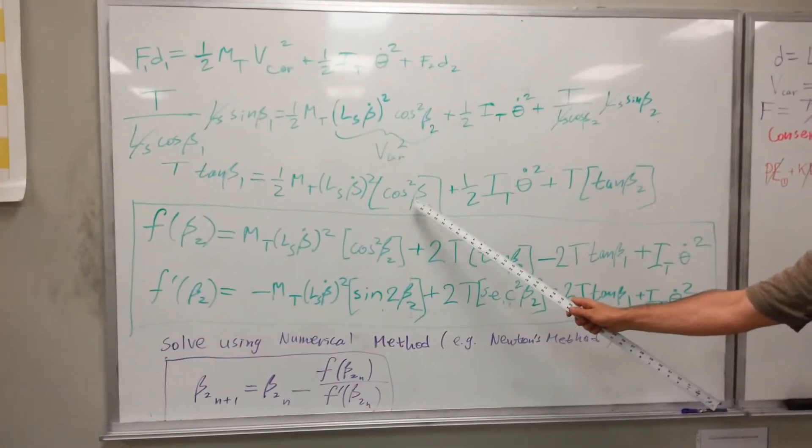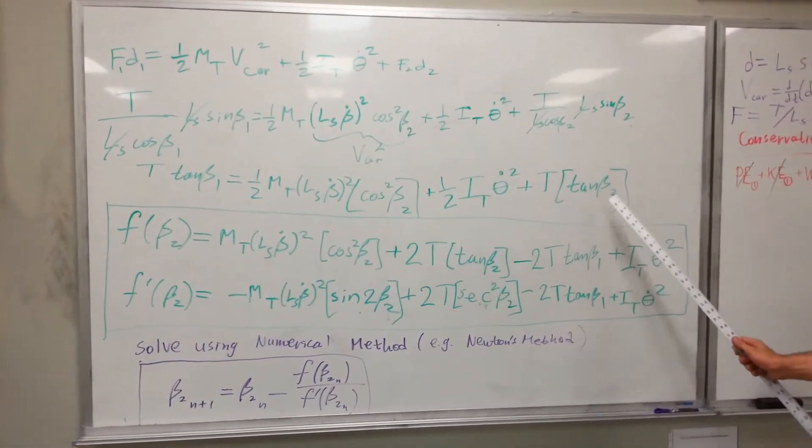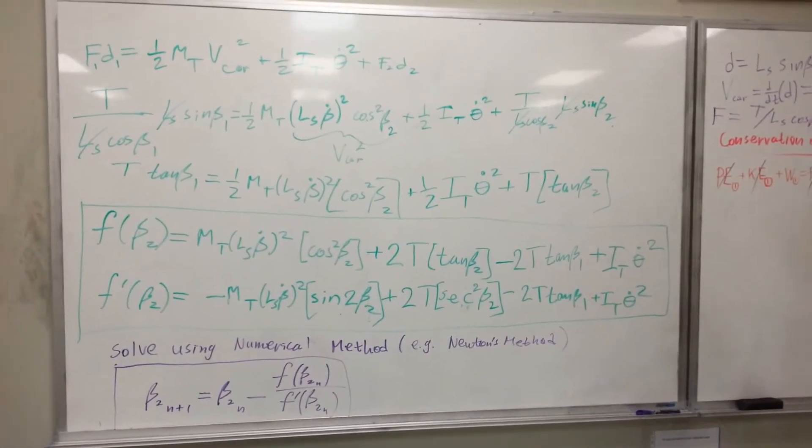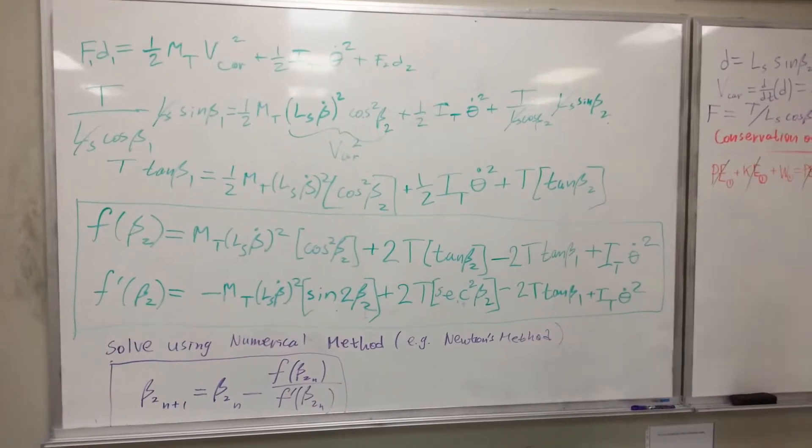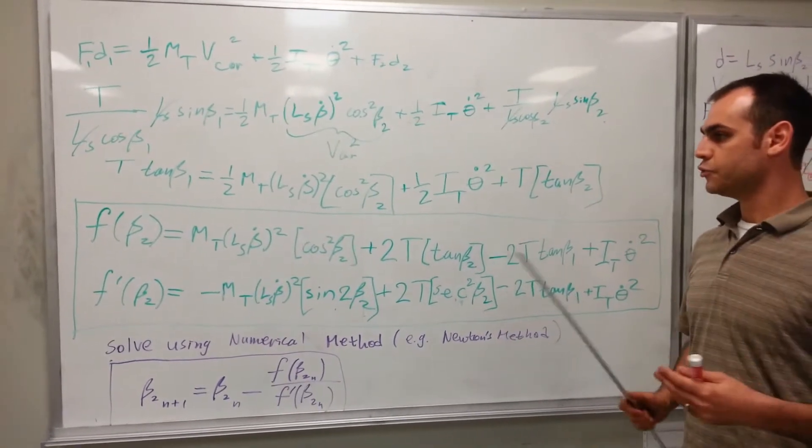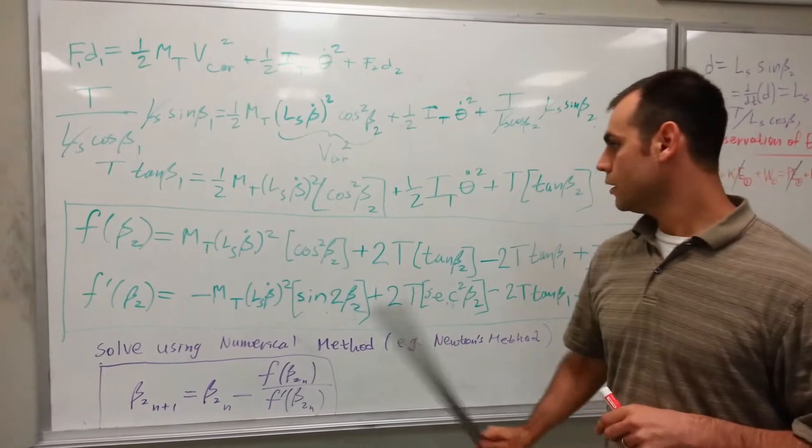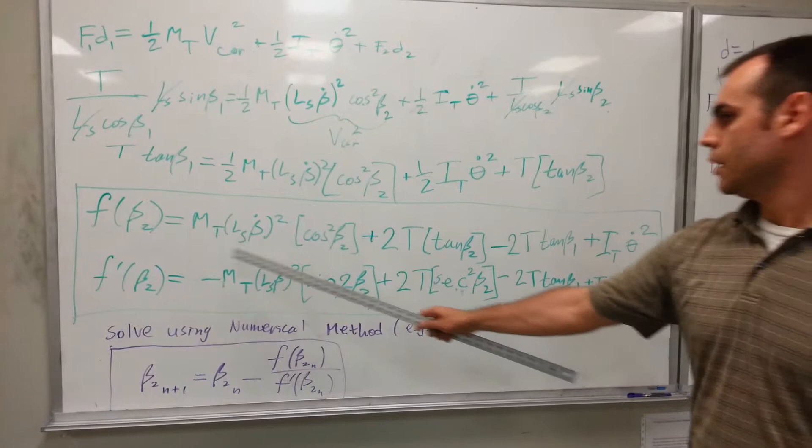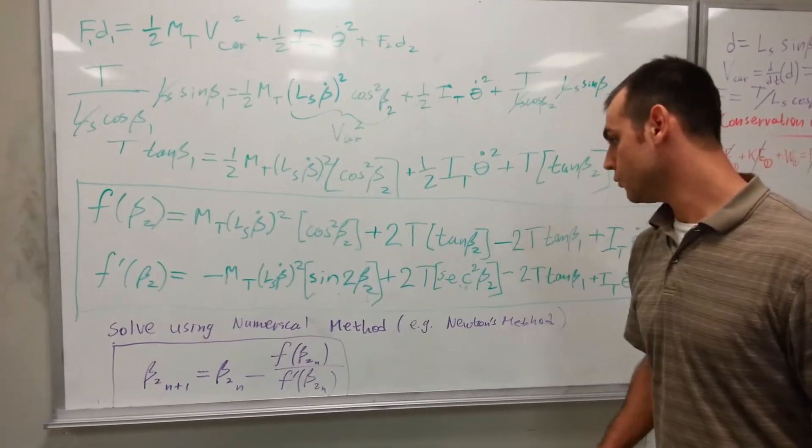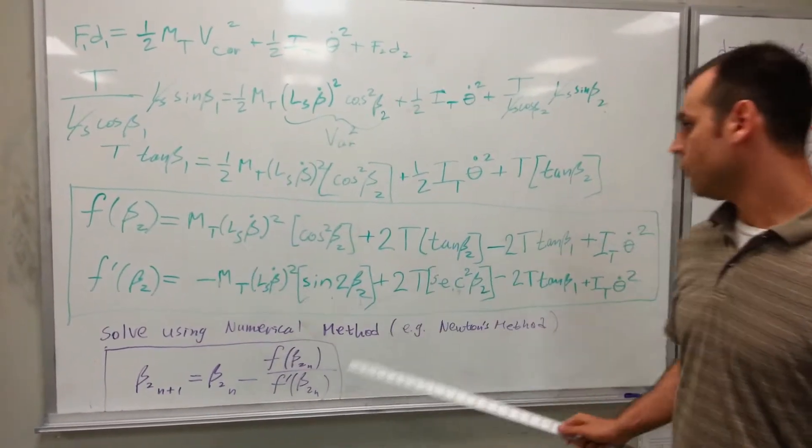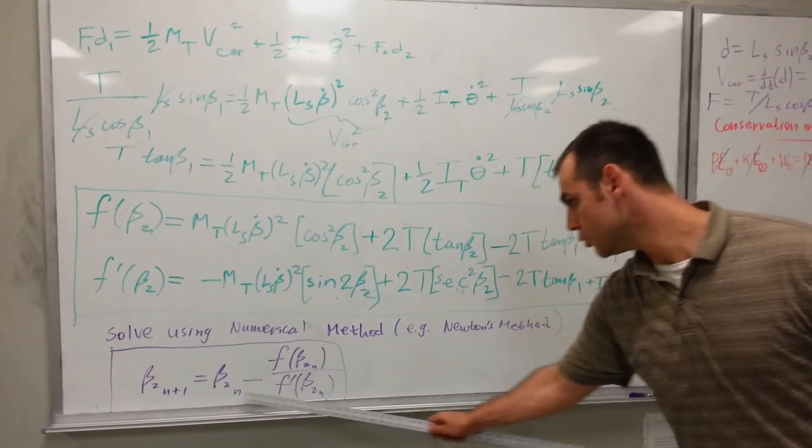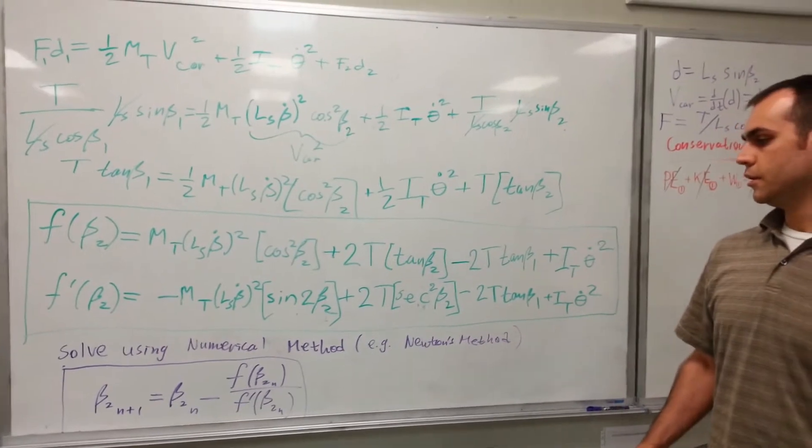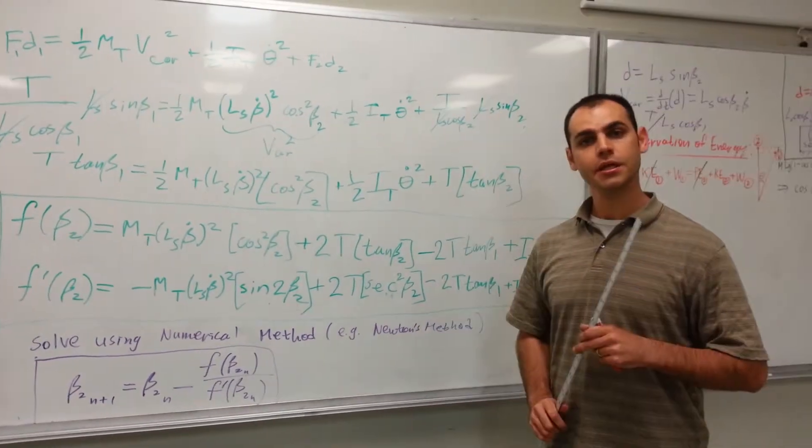So, as you can see here, our unknown is the beta, beta 2, and it's a transcendental function, which cannot be solved for analytically. And because of that, we have to go to numerical methods here. So, you just bring everything to the one side of the equation and equate it to zero. And you take the derivative, if you want to use a Newton's method. And now, you have these two functions. You simply plug it into this Newton's method formula, and you can iterate it until the desired beta 2 solution is obtained.